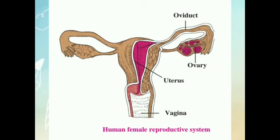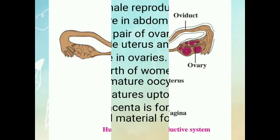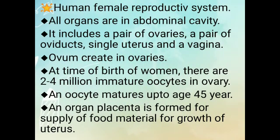This is the diagram of the human female reproductive system. It consists of oviducts, ovary, uterus, and vagina. All organs are in the abdominal cavity. It includes a pair of ovaries, a pair of oviducts, a single uterus, and a vagina.